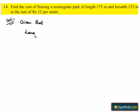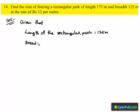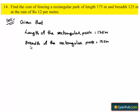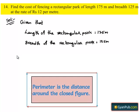Given that the length of the rectangular park is equal to 175 meters and the breadth of the rectangular park is equal to 125 meters. We have to find the cost of fencing the rectangular park. To calculate the cost of fencing, we require the perimeter. So first, find out the perimeter of the rectangle.